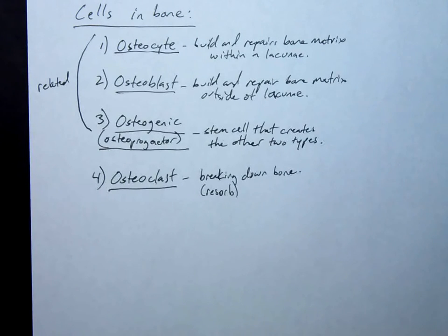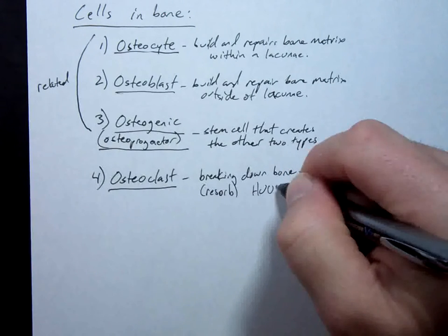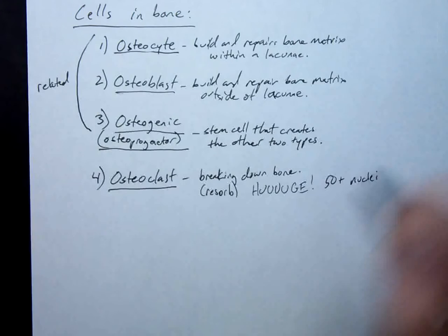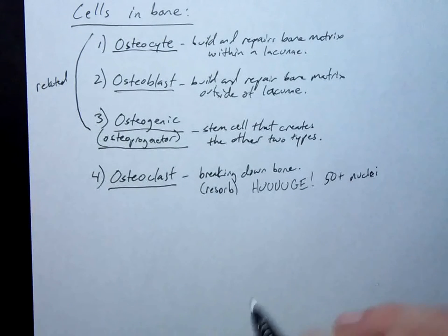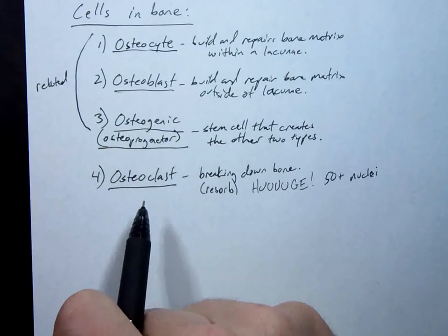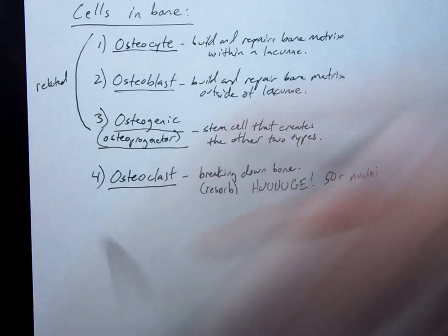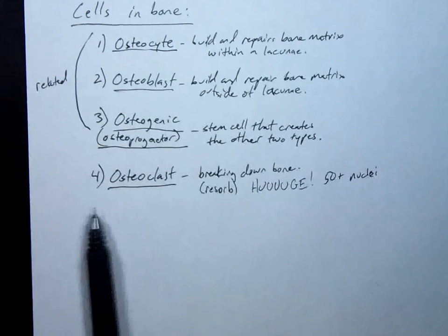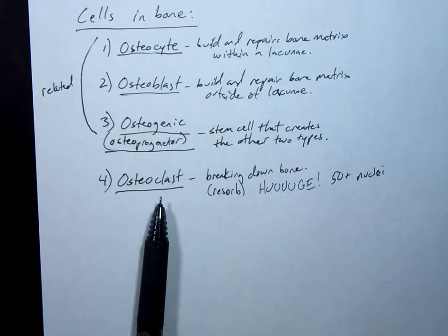Why in the world would you want one of those? Let alone thousands of them. Let me tell you something else about osteoclasts: they're huge. They have 50-plus nuclei. Most cells, if they even have one, get one nucleus — this cell gets 50 or more. It's an enzyme-making, bone-eating machine — Wreck-It Ralph. So why in the world do we want this cell on staff — a cell that destroys bone?